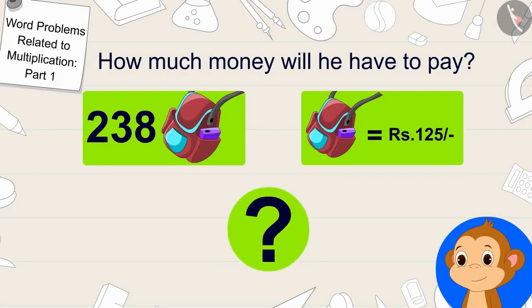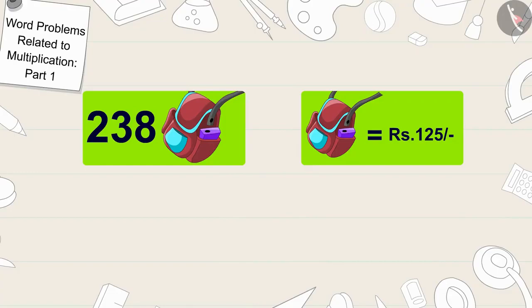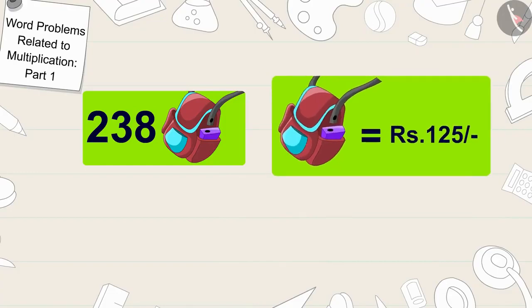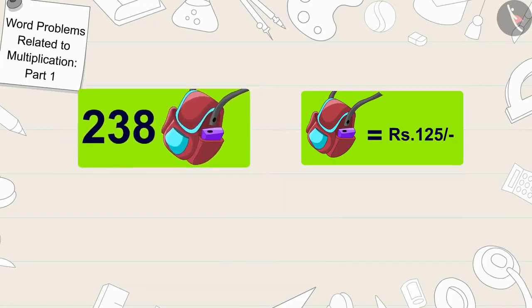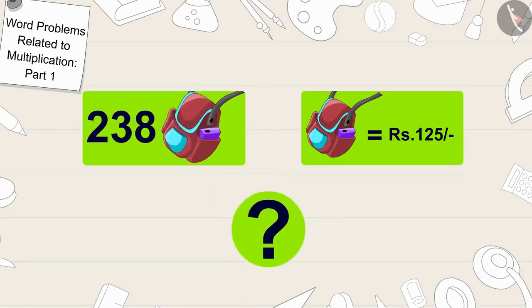Children, can you help Babban find a solution to this question? Whenever we have been given the cost of one item and we have to find the total price of many items, then what process will we use?